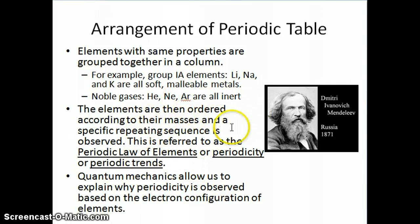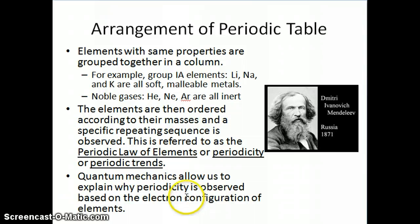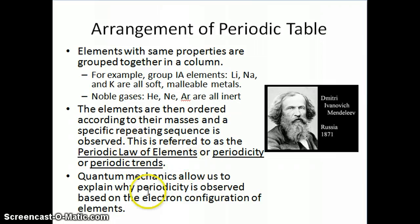Even though Mendeleev was able to organize the elements based on their periodicity, he wasn't able to explain why the periodicity must exist. It's not until quantum mechanics was developed and the electron configurations of elements were determined for all of the elements in the periodic table that people were able to figure out and explain why there has to be periodicity in elements. That's what we're going to do in this segment — use quantum mechanics to explain why we see periodic trends.